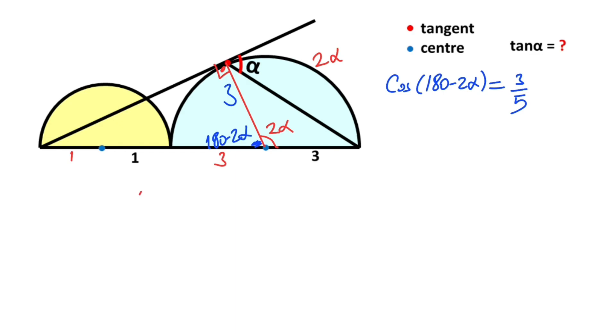We know that cos(180 - 2α) equals -cos(2α). You have to know this, it's very important. So this expression equals -cos(2α) equals 3/5. That means cos(2α) equals -3/5.